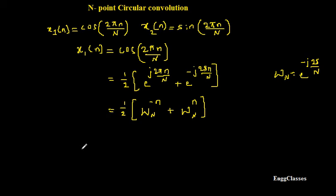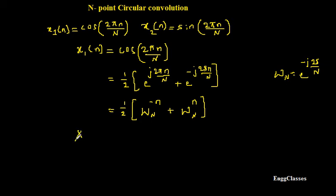Now for Stockham's approach, I need to first find X1(k) and X2(k), which are the DFTs of x1(n) and x2(n). Later I multiply the sequences to get Y(k) = X1(k) * X2(k), and then find the IDFT of that sequence to get y(n), which is the N-point circular convolution.